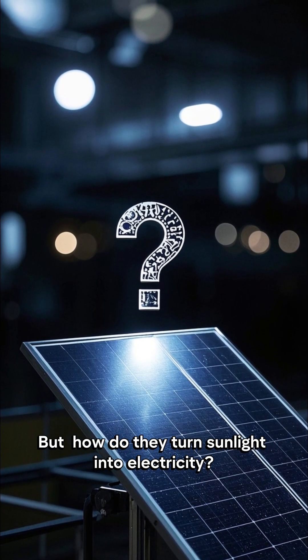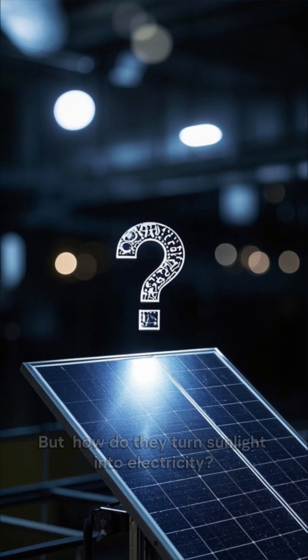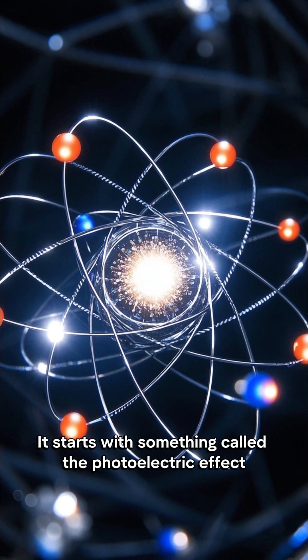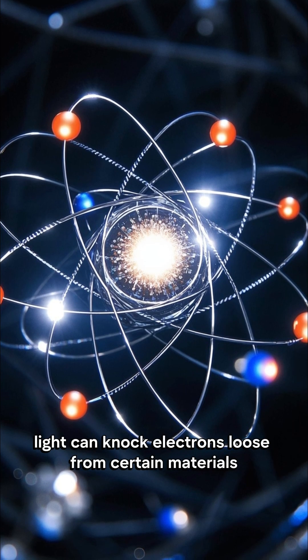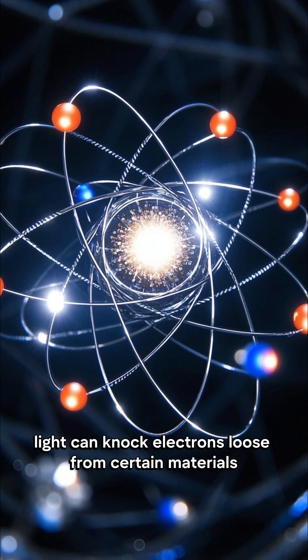But how do they turn sunlight into electricity? It starts with something called the photoelectric effect. That's a fancy way of saying light can knock electrons loose from certain materials.